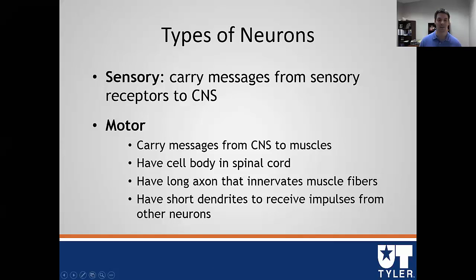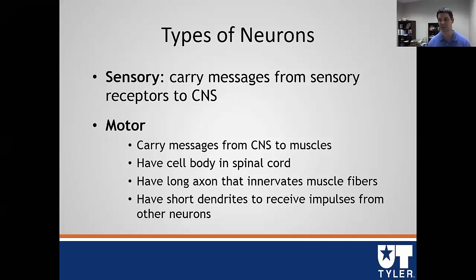The other type of neuron is the motor neuron, and this carries messages from the central nervous system out into muscles. These are what we picture when we think of nerves — they have a cell body in the spinal cord and a really long axon that goes through the body and innervates muscle fibers. Up in the spinal cord, they usually have very short dendrites that are able to receive impulses from other neurons. We can send signals down from the brain, which are then processed in this cell body, and if the signal is strong enough to have a contraction, we send it down that long axon and cause a muscle contraction.